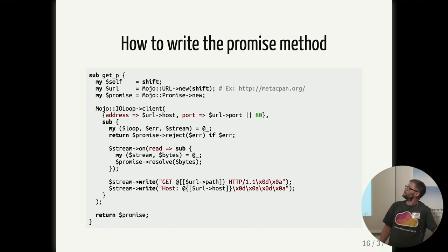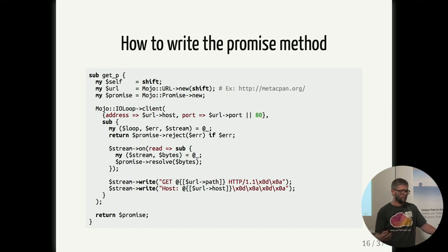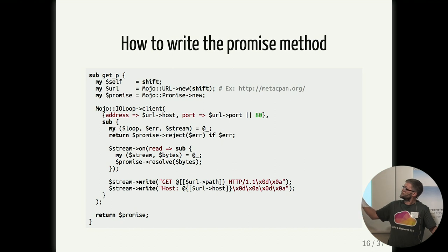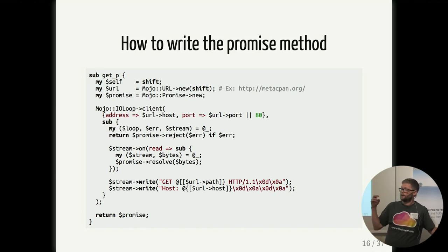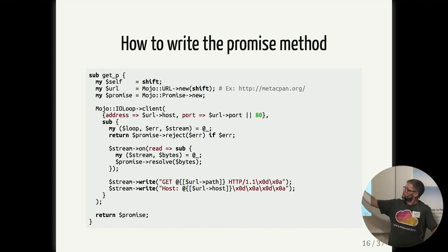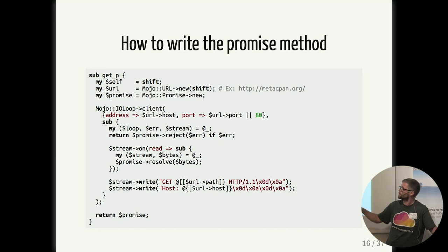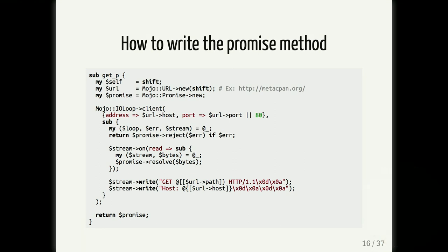I usually start out writing the promise version first, because I usually need that in my Mojolicious applications where I like to write everything non-blocking so I can handle a lot of requests in parallel. This method accepts a URL, for example metacpan.org, and creates a promise - that promise object is also the return value at the bottom. After that we use Mojo::IOLoop client, a low-level method for creating a TCP client, to connect to whatever host and port we specified in the URL. At some point in the future, the sub-block will be called receiving the error message if any and a stream object. If we get an error, it rejects the promise instantly.